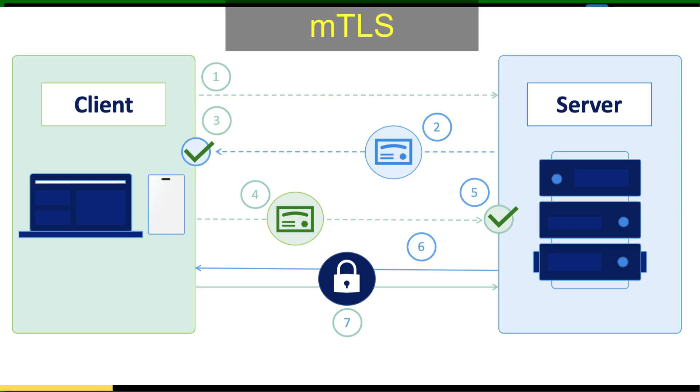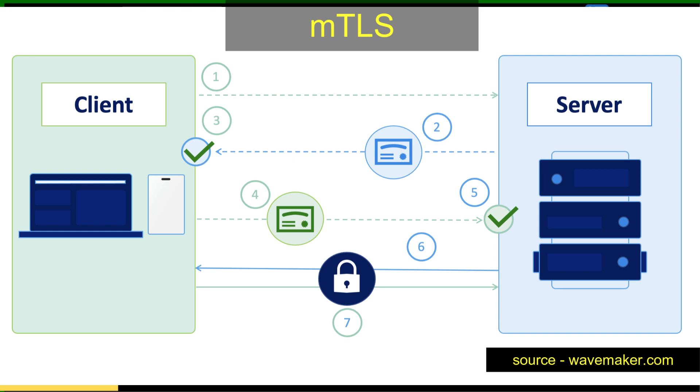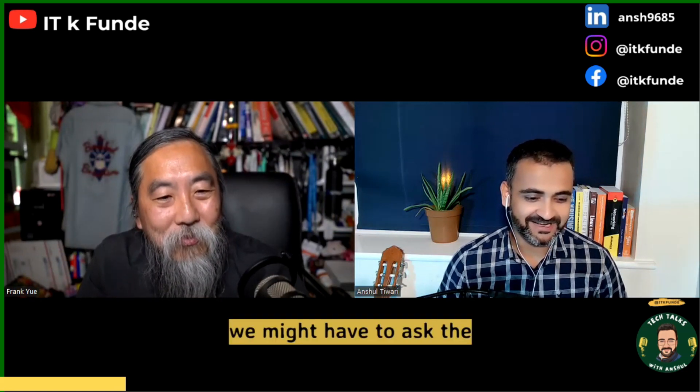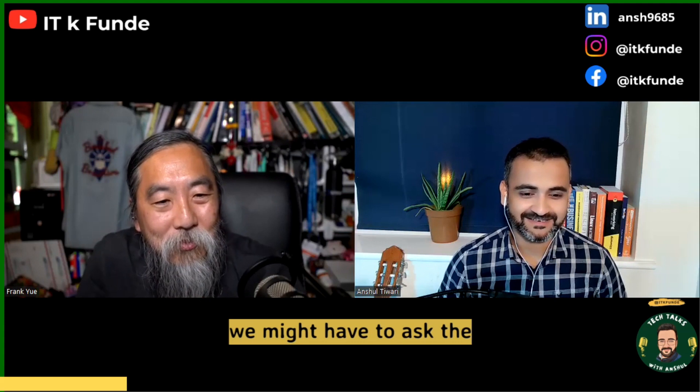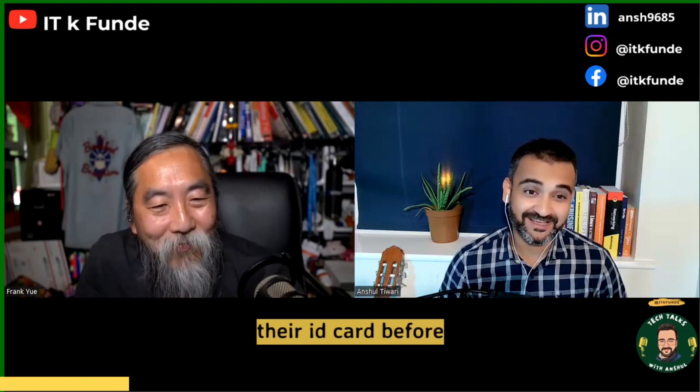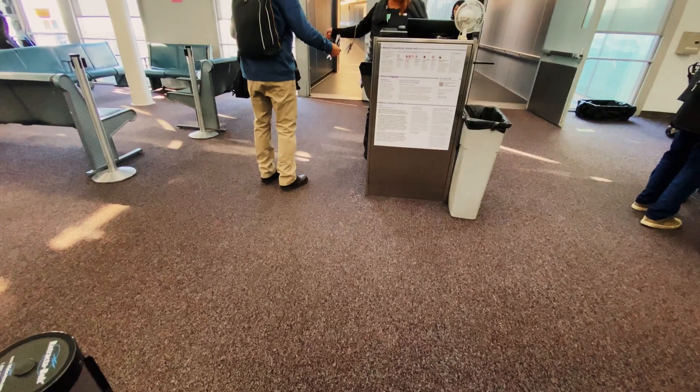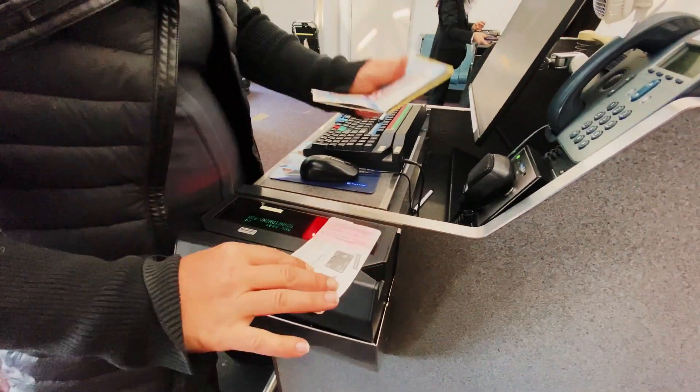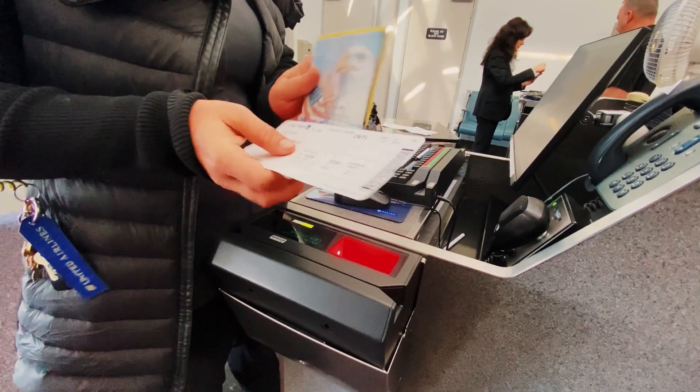It's not just the client trusting that this is the server — it's also the server saying, I trust that you are this specific client. That's the whole mutual part of Mutual TLS. If I relate it to an example, we might have to ask the customs authority to show their ID card before asking for my password. Because if I am an Indian, you want that proof, but I also want to know on what basis you are asking me that. That's where Mutual Authentication comes in.